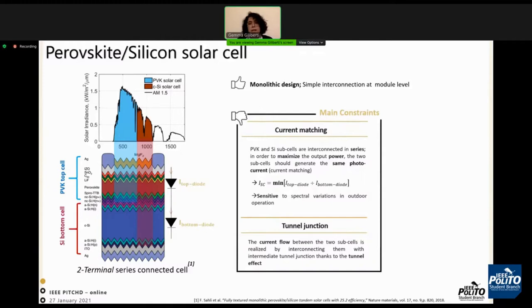It has a simple interconnection at module level. However, it has several constraints about current matching and tunnel junctions. The current matching is linked to the fact that the perovskite and silicon subcells are interconnected in series in order to maximize the output power. So the two subcells should generate the same photocurrent. If the photocurrents are unbalanced, the total efficiency decreases.